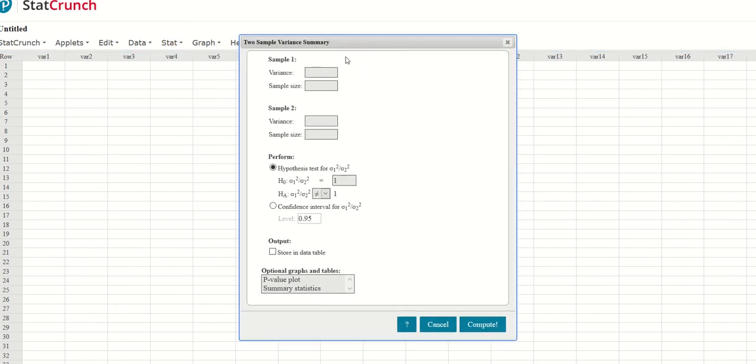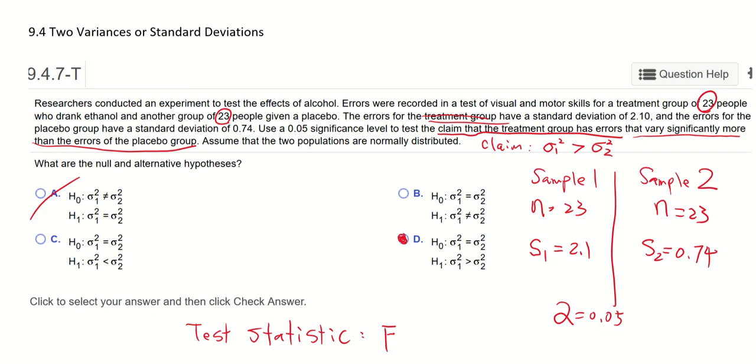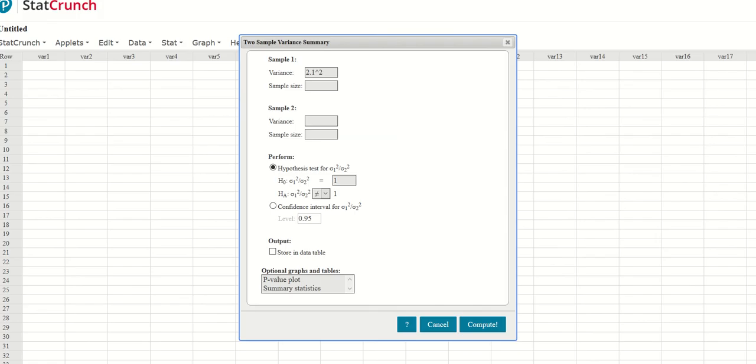Okay so sample one the variance, if we go back to the problem we can see we do not know the sample variance, we do know the sample standard deviation. So the sample variance could be found by squaring the sample standard deviation which is 2.1 squared. You don't have to evaluate that, the system will do the calculation for you. We know the sample size is 23 for both samples and the sample variance for the second sample is 0.74 squared.